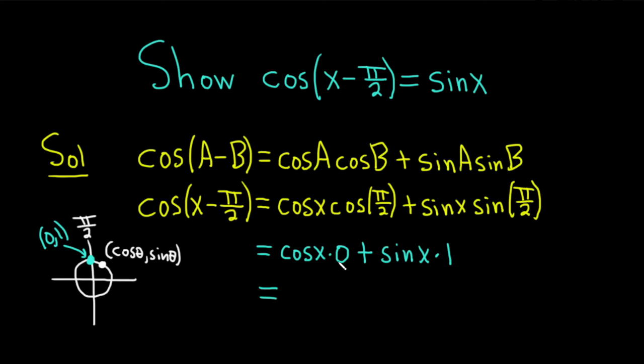So we have, well, cosine x times 0 is just 0 plus, and then sine x times 1 is just sine x. And so this is equal to the sine of x.